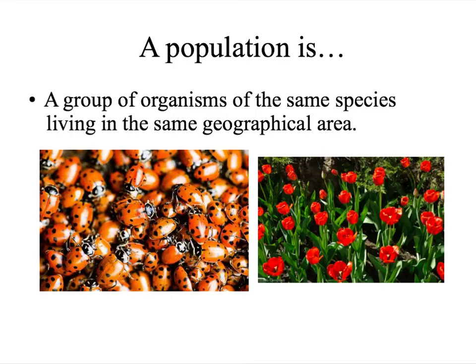So the first question is: what is a population? We talk about a population of a city, but in biology a population is a very specific thing. Please record this definition. A population is a group of organisms of the same species living in the same geographical area.